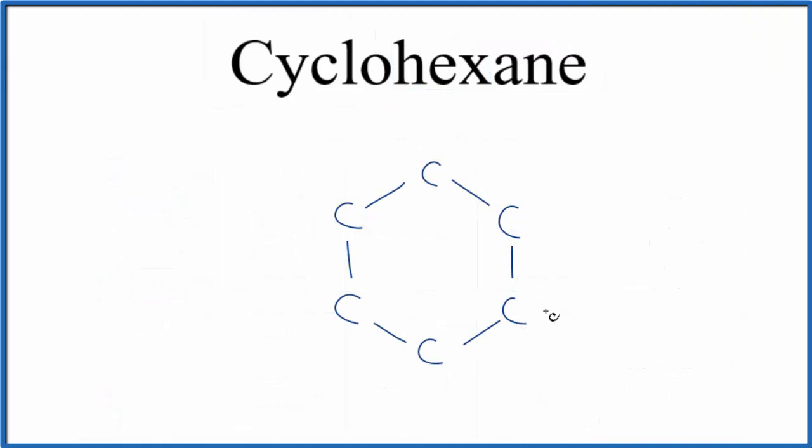So we have our six carbons here in a ring, and each carbon in an alkane will be attached to four things, because it only can have single bonds. So this carbon, for example, has one, two, and then it's going to have two more things. Those are going to be hydrogens, and we can just put these off like this.